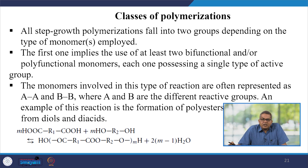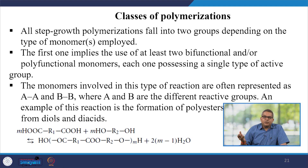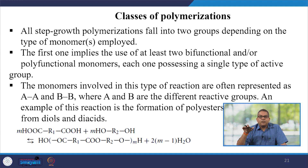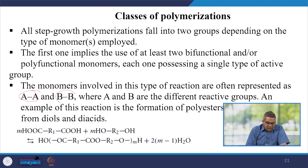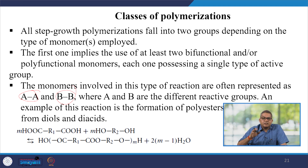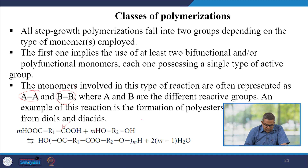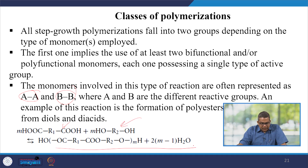The first group implies the use of at least two bifunctional or polyfunctional monomers, each one possessing a single type of active group. The monomers involved in this type of reaction are often represented as AA or BB, where A and B are different reactive groups. An example of this particular reaction is the formation of polyester from diols and diacids.